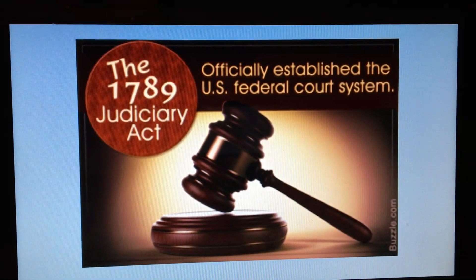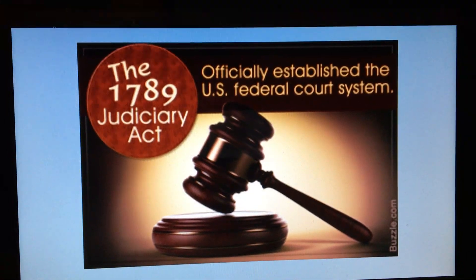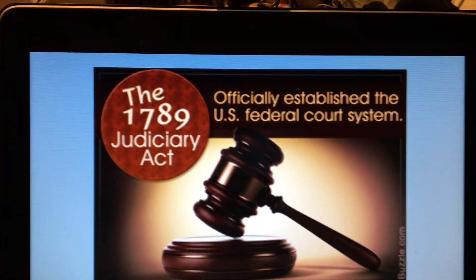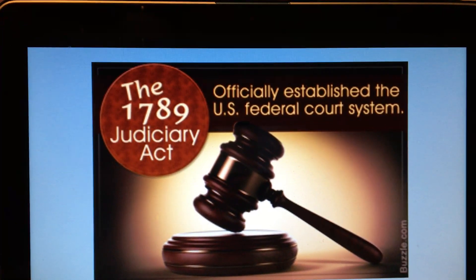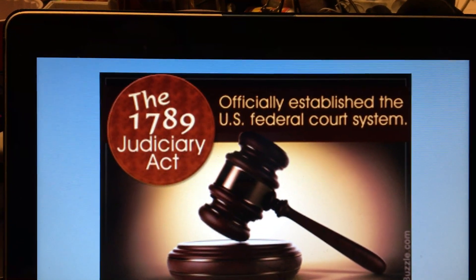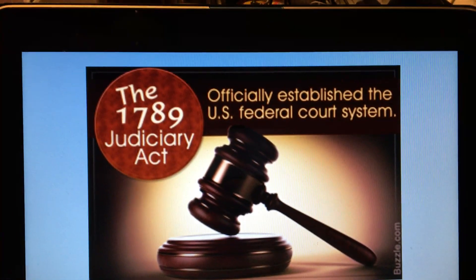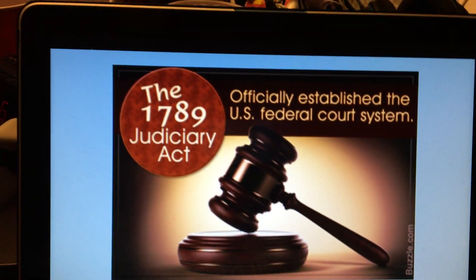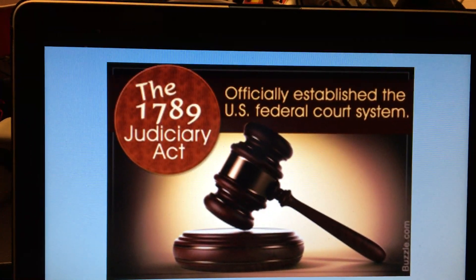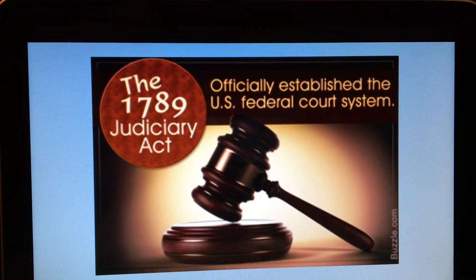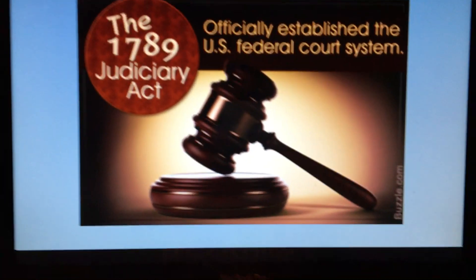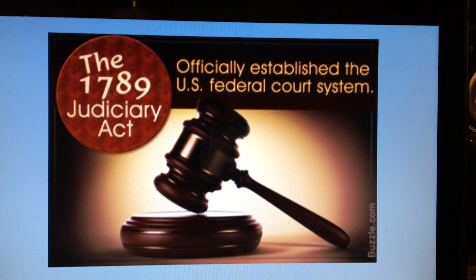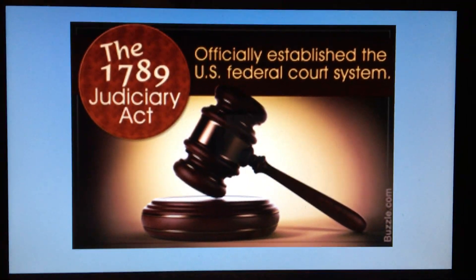Overall, this is how the federal court system was established. It happened after the Constitution because the Constitution doesn't fully explain the judiciary system — it really only talks about the Supreme Court. Congress was then able to get a firm grip on what they wanted from the system and establish it fully through this act. It really lays out the foundation of what we have today for the judiciary system.